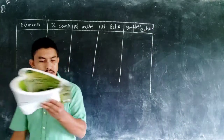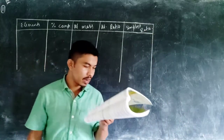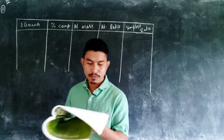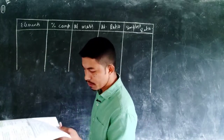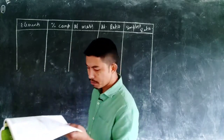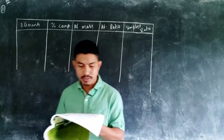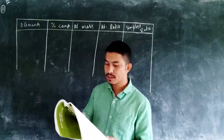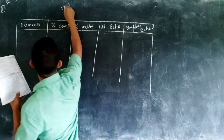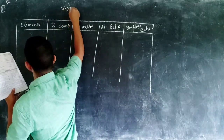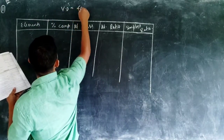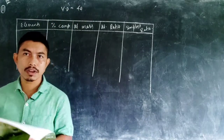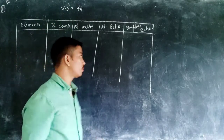The question states: a substance was found to contain 54.54% carbon, 9.09% hydrogen, and 36.36% oxygen. The vapor density is also given as 44. You need to find its empirical formula and the molecular formula.